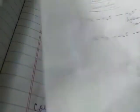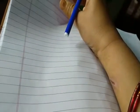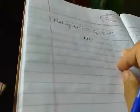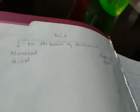Now let's classify acids. There are many bases of classification of an acid, but on the basis of occurrence, acids are of two types: mineral acid and organic acid.